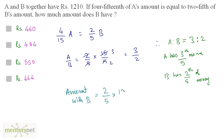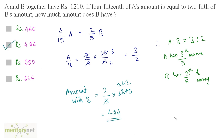That is (2/5) × 1210, which equals 242 × 2 = 484. So the correct option is option number two.